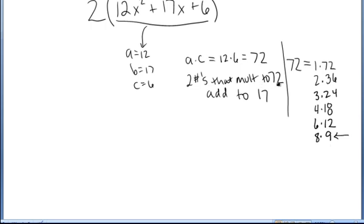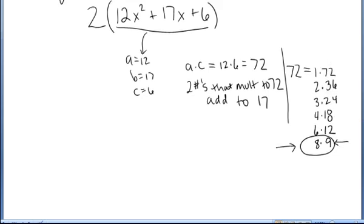I need to find two numbers that multiply to 72, but at the same time add to 17. The only two numbers that do that on the list are 8 and 9. So those are my two numbers, 8 and 9. Now I'm going to make a table.